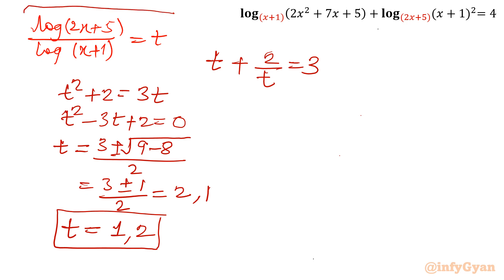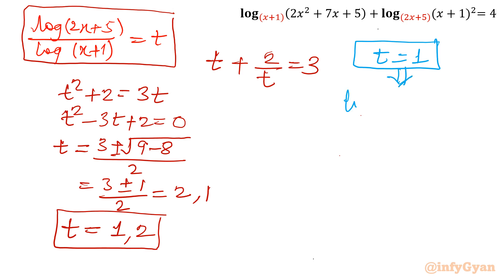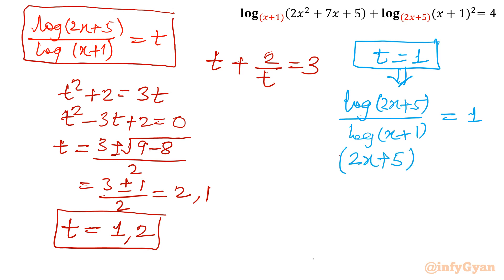Now we will use our substitution. For t = 1: log(2x+5)/log(x+1) = 1. This means 2x+5 and x+1 must have the same value, so we can equate them directly. Solving gives x = −4.